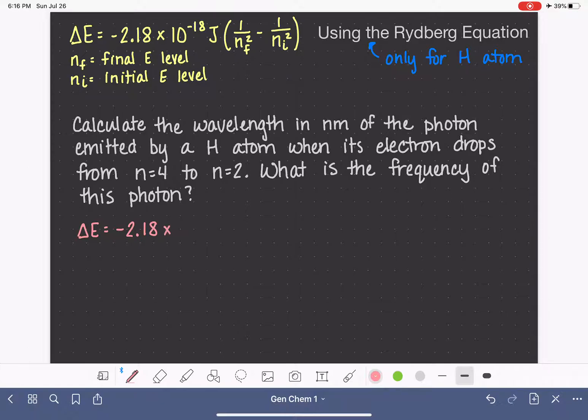2.18 times 10 to the negative 18 joules. Now we need to figure out, of our two energy levels, which one is the initial and which one is the final. And this is just really in terms of the direction that the electron is going. So it's going from N equals 4, so that means this is our initial, because that's where it starts.